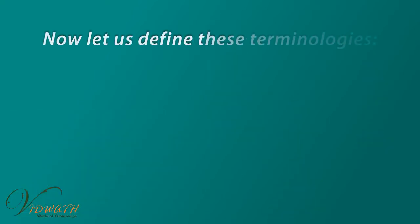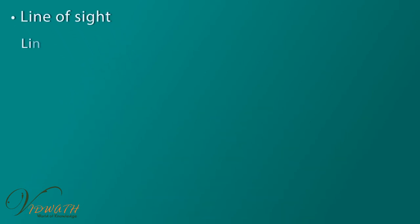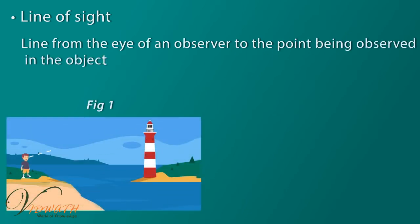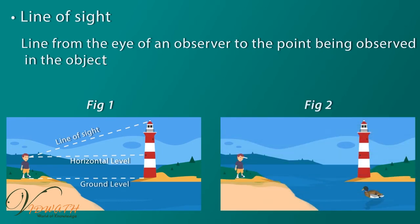Now, let us define these terminologies. Line of sight: line from the eye of an observer to the point being observed in the object. The line of sight is a horizontal line parallel to the ground level, but not always the line of sight will be a horizontal line. Observe the point of view in the following figures.